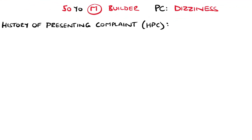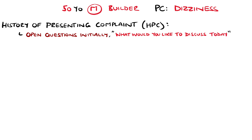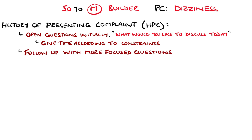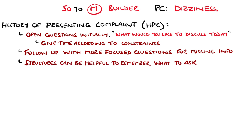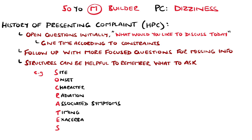The history of presenting complaint forms the bulk of the history in most cases. We would begin with an open question — like 'what would you like to discuss today?' being a good example in general practice, less so in arranged follow-up consultations. Then let the patient speak without interruption. This should be the case for several minutes, depending on the time constraints you have. Then ask more focused questions if there is still information you need that they haven't given you from the open answers, which is often the case.